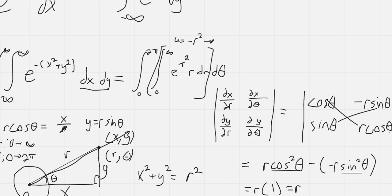In other words if we use the u substitution u equals negative r squared then that means that du is equal to negative 2 r dr, meaning that this r dr is just negative du over 2 and that this negative r squared is just u.